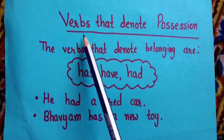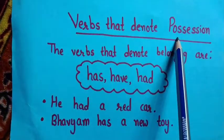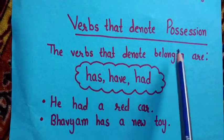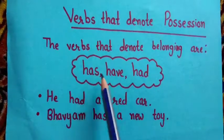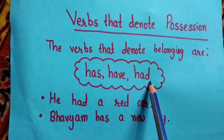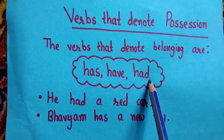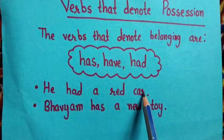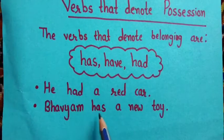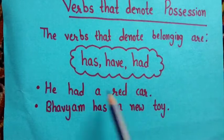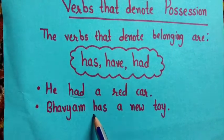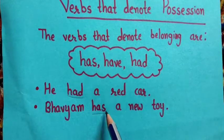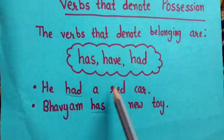Next, we have verbs that denote possession — these verbs denote belonging or possession. These are has, have, and had. Examples: he had a red car. The verbs 'had' and 'has' are not doing words but they tell us about belonging. He had a red car — what did he have? A red car.